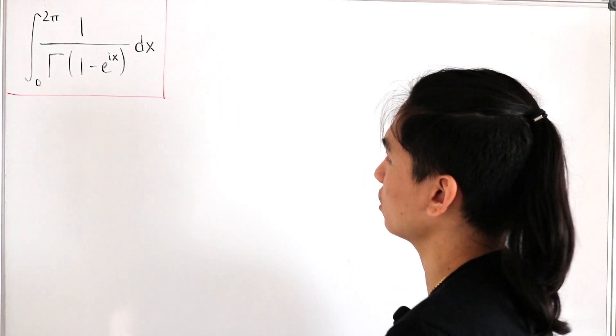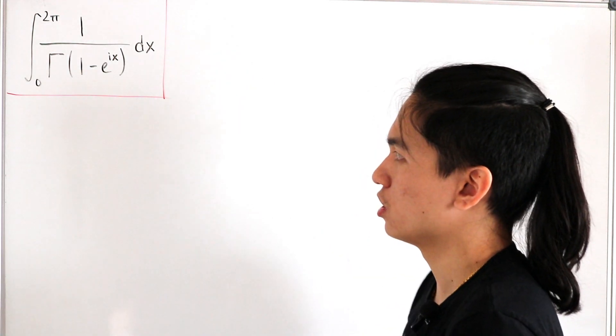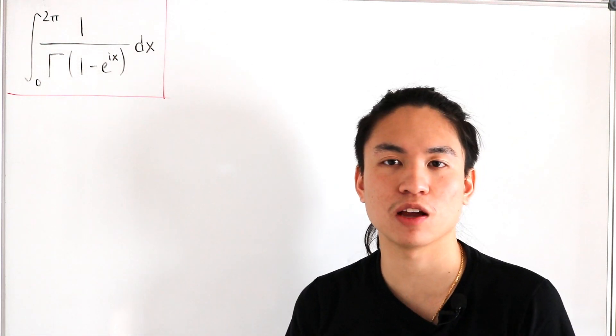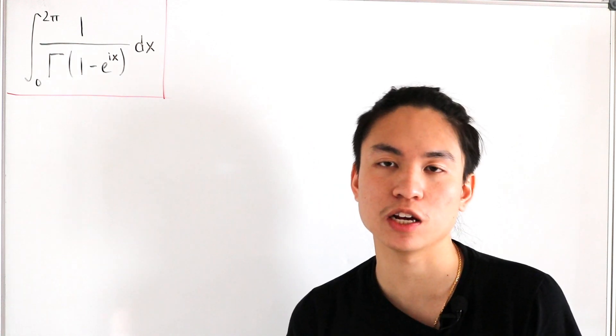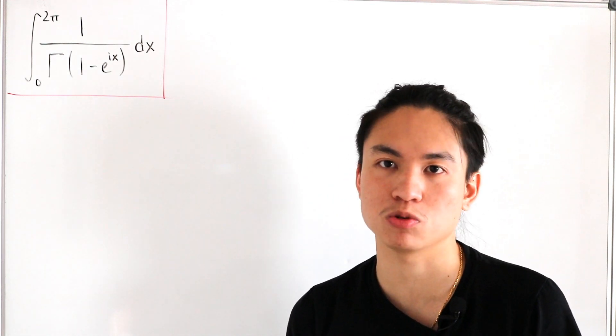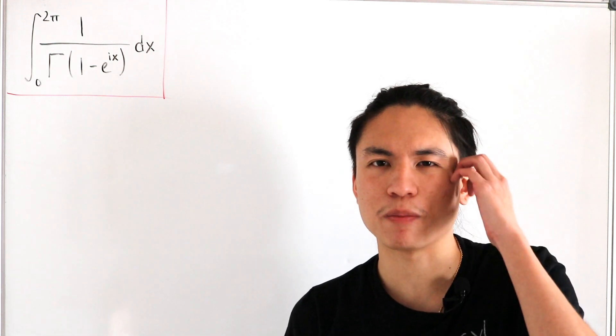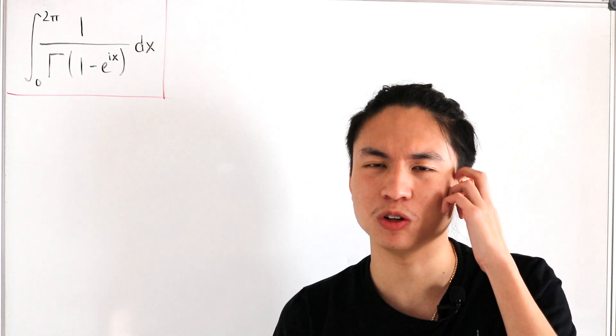But how will we evaluate something like this because we have a gamma function? One might think it's probably possible to use the integral representation of gamma, so hopefully we could proceed forward from somewhere. But I promise there's actually a little easier trick.